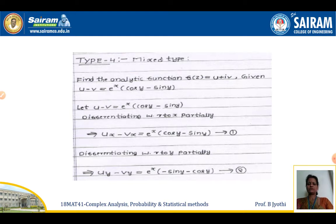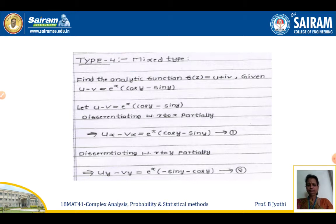In this type, before going to the problem, I would like to give a few glimpses. They will be giving you the combination of u and v — either u plus v or u minus v. It can be in the Cartesian or in the polar form. We need to find the analytic function using this.